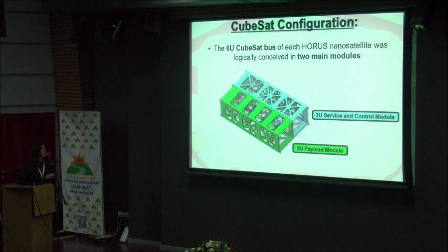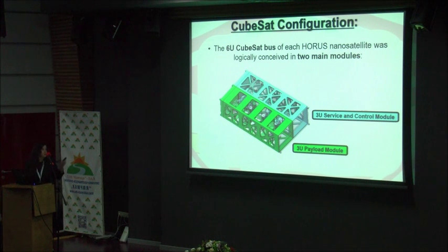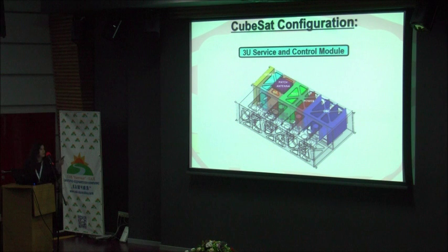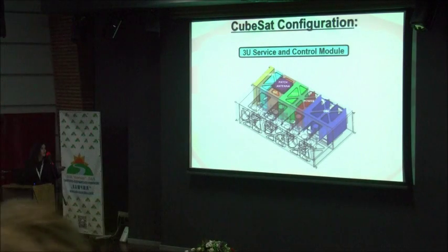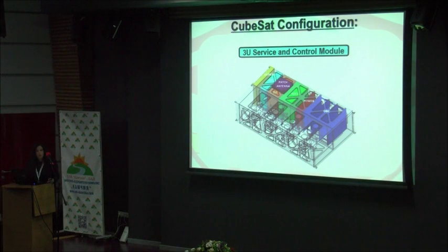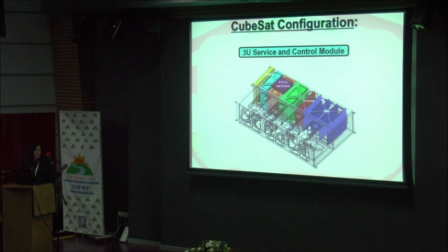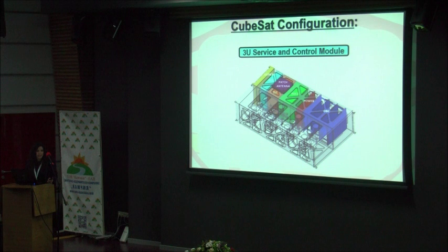The CubeSat structure is divided into two main modules. The 3U service and control module will carry all the subsystems needed for the CubeSat's functioning and operations: the onboard computer, power system, attitude and orbit control system, patch antenna for TT&C, orbit control system, and a drag sail for de-orbiting, in order to respect the ADCS guidelines.